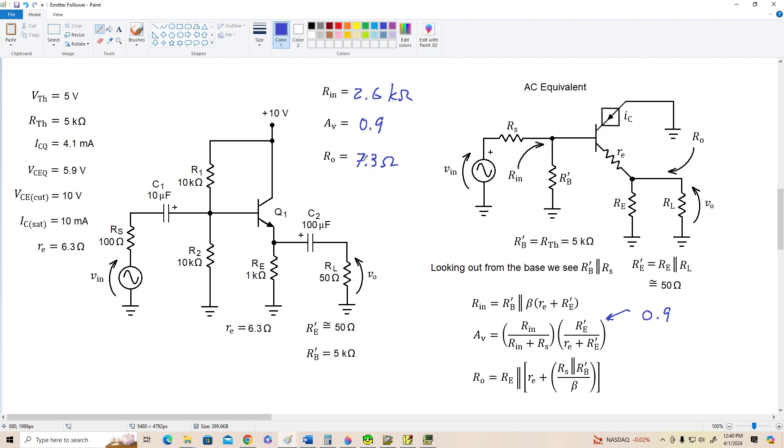Alright, so our output resistance is low. It's less than 10 ohms. That's good. That makes this amplifier very effective at driving this relatively low resistance load.